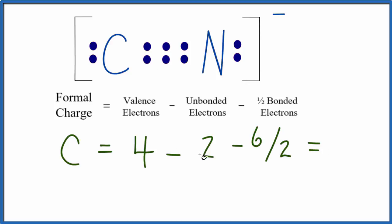When we add them up, 4 minus 2 is 2, and 2 minus 3, we end up with a -1 formal charge on the carbon. So let's put that up there, -1 right there. For the nitrogen,